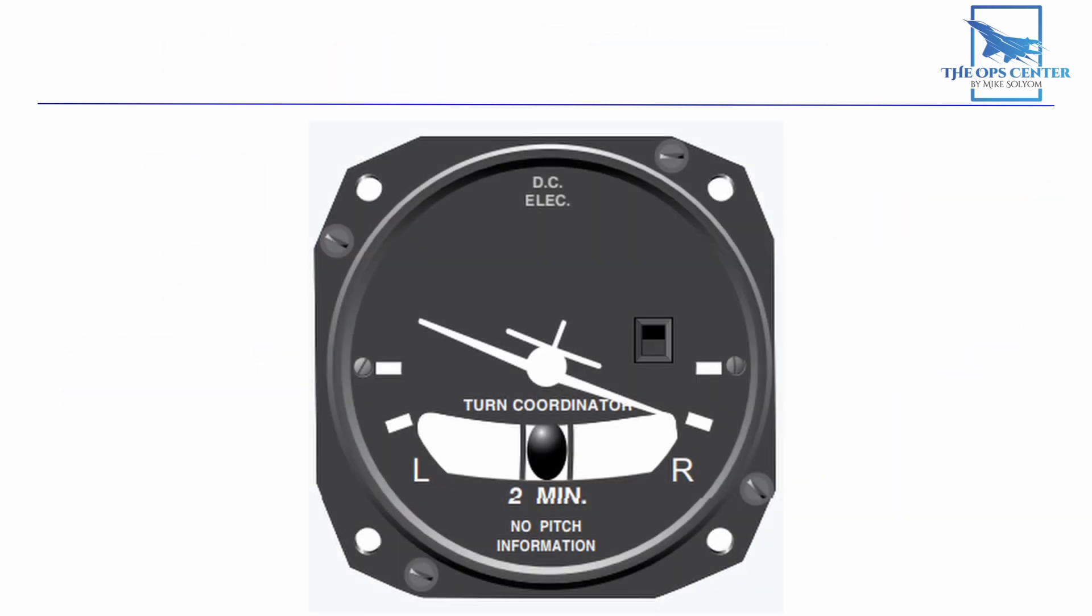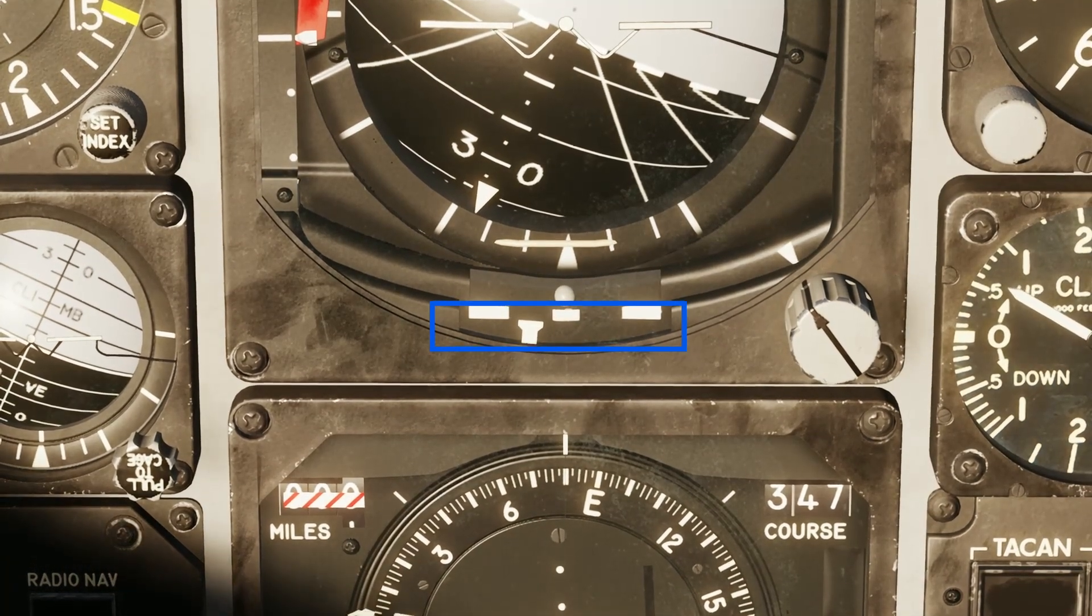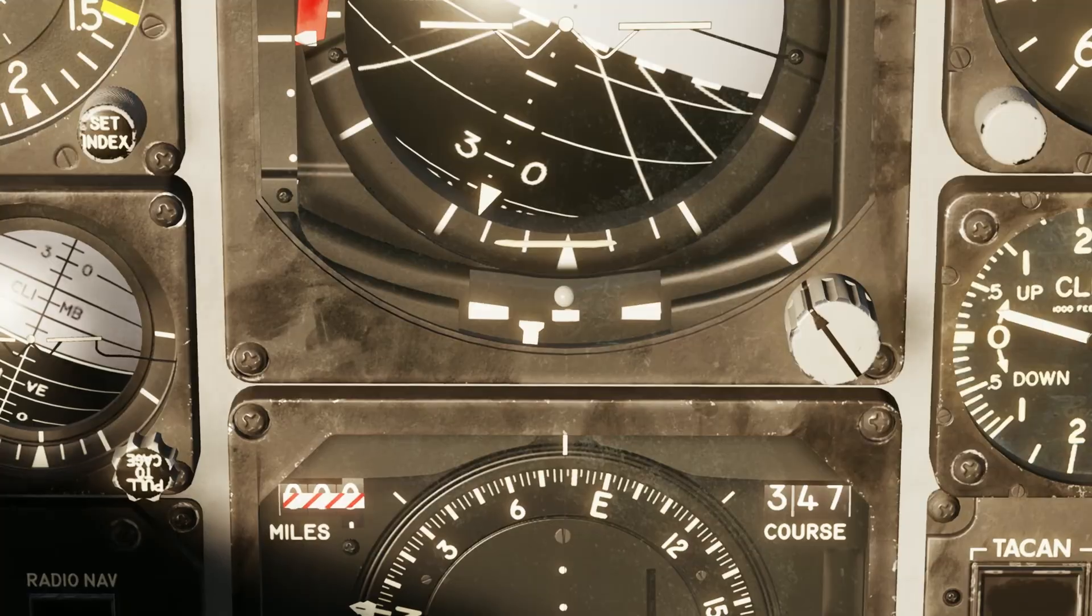In many aircraft, you'll find an instrument that looks like this, where the airplane symbol banks with the aircraft. When its wing tip reaches the lower mark, that means that the plane is making a standard rate turn. You might also see something like this at the bottom of our trainer's ADI. This is also a type of turn rate indicator.